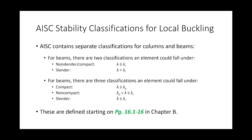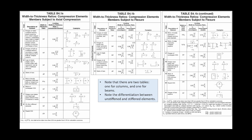For beams, there's a lambda P and a lambda R, and we check our cross-sectional elements to see what classification they fall under. We have three designations: compact, non-compact, or slender. Compact, non-compact, and slender define the stockiness or flimsiness of your flange and web. You can find these in Table B4.1-16 — everybody turn to that in your AISC 15th edition steel construction manual right now.